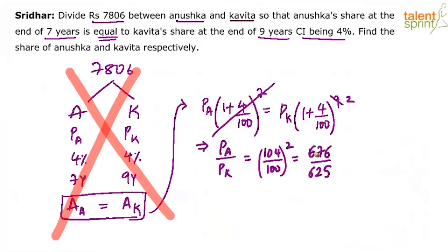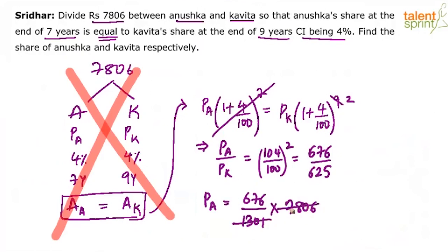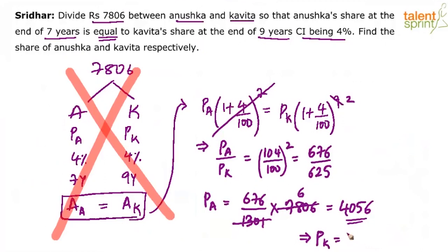The total amount is 7806. Anushka's share will be 676 parts out of a total of 1301 parts, multiplied by 7806. That gives 6 × 676 = 4056. So Anushka's share is rupees 4056 and Kavita's share is 7806 minus 4056, which comes out to be 3750.